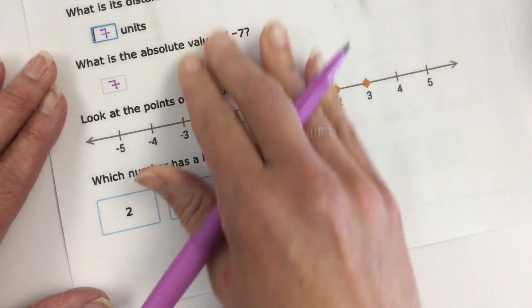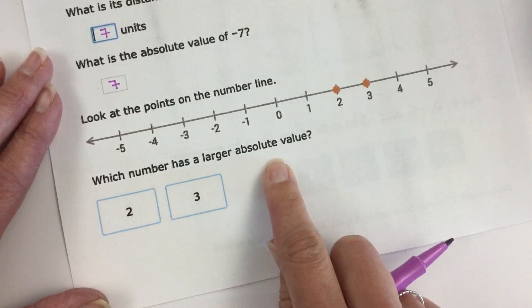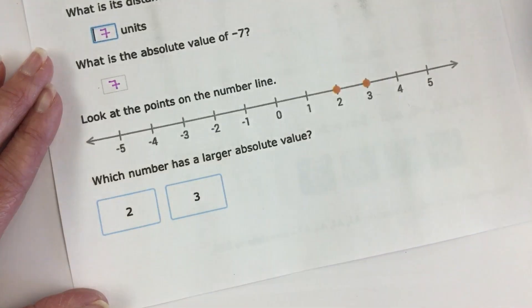Now that you go through those examples, it might give you some and it says look at the points on the number line. Which number has a greater or a larger absolute value?